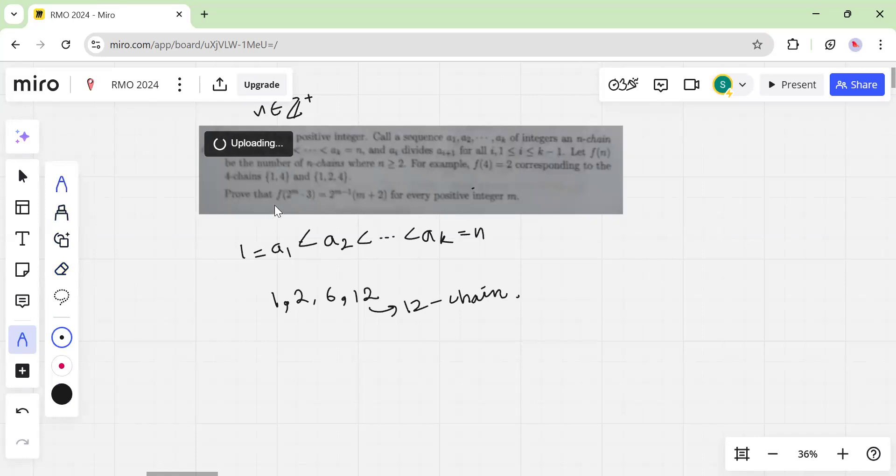And we have to prove that f of n is the number of such sequences and chains, and we have to prove that f of 2 to the m times 3 is equal to this quantity.